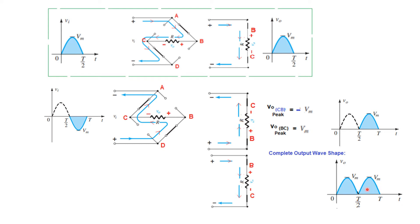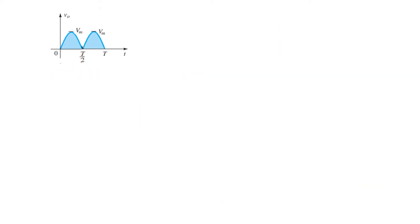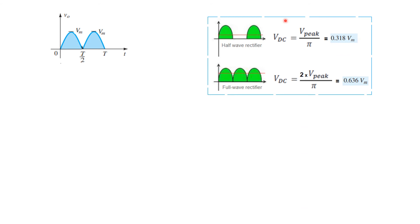This is the complete output for both half cycles — a full wave rectifier. To find the DC value: for a half wave rectifier, VDC = Vp/π = 0.318 Vm. For a full wave rectifier it is double that, so VDC = 2 × 0.318 Vm = 0.636 Vm.